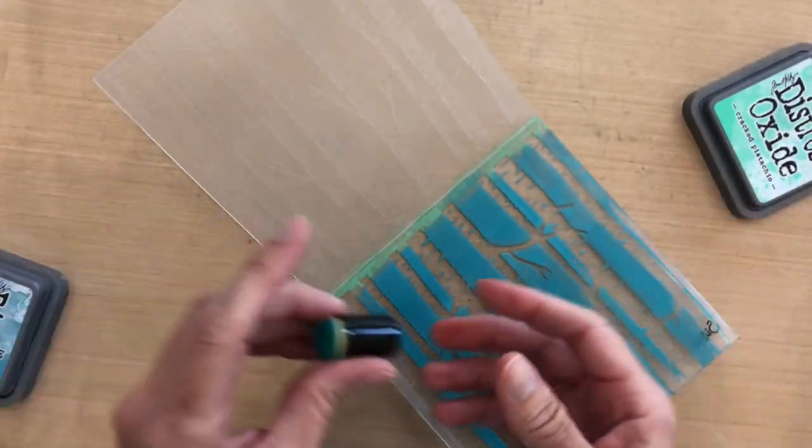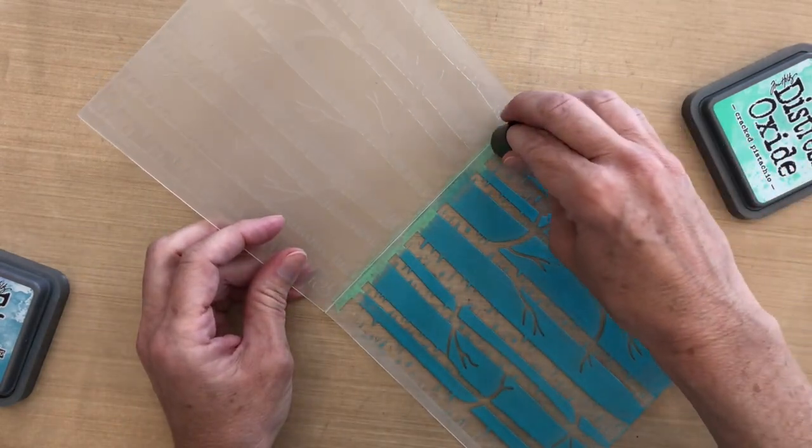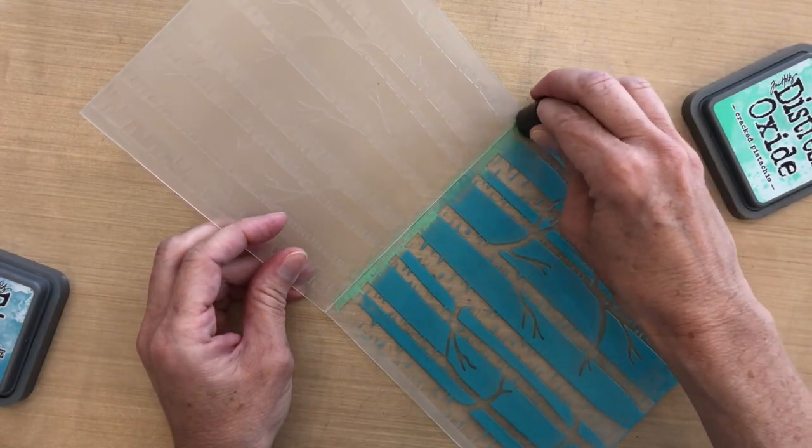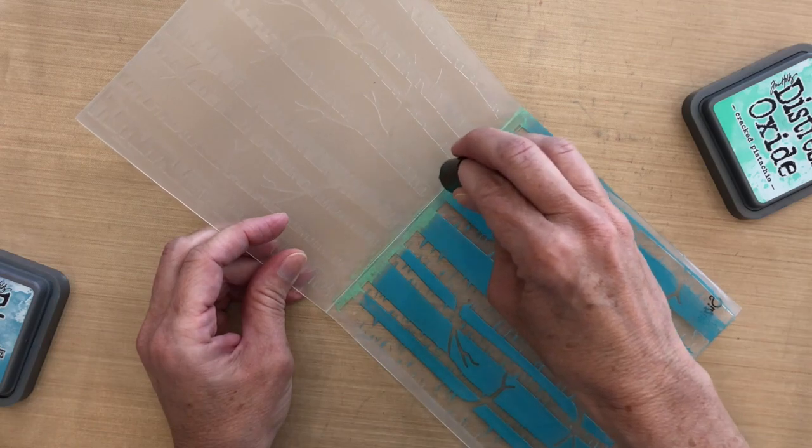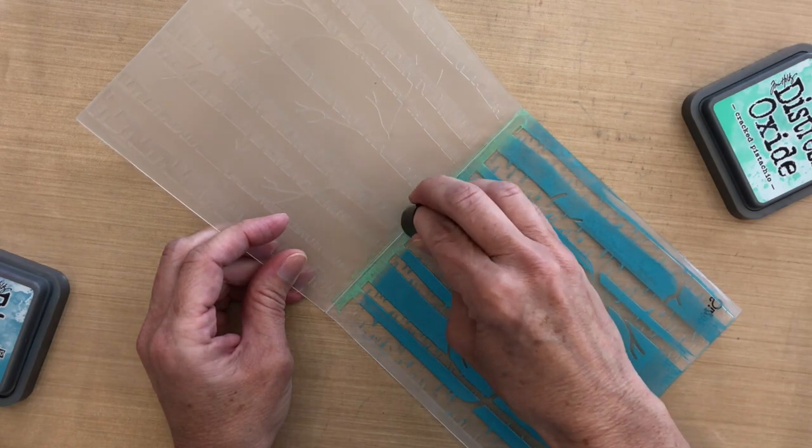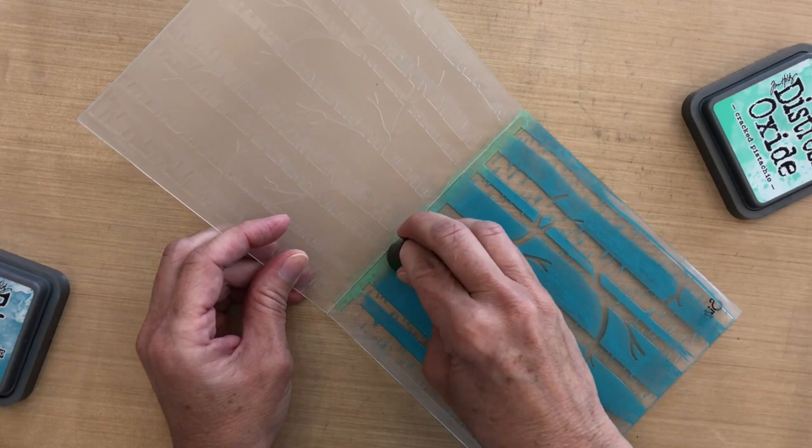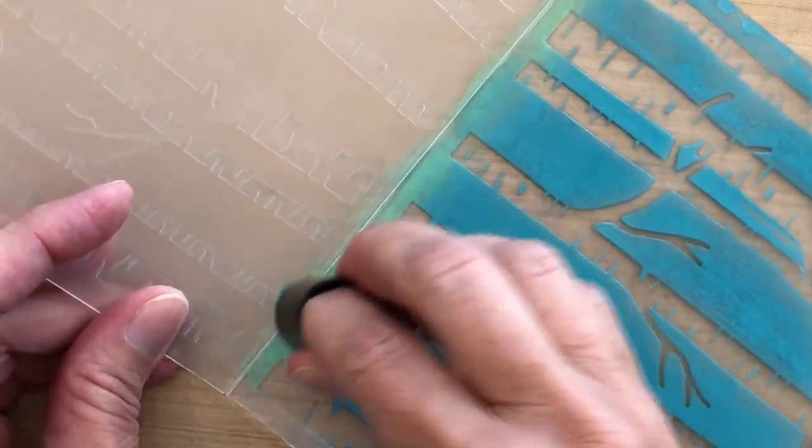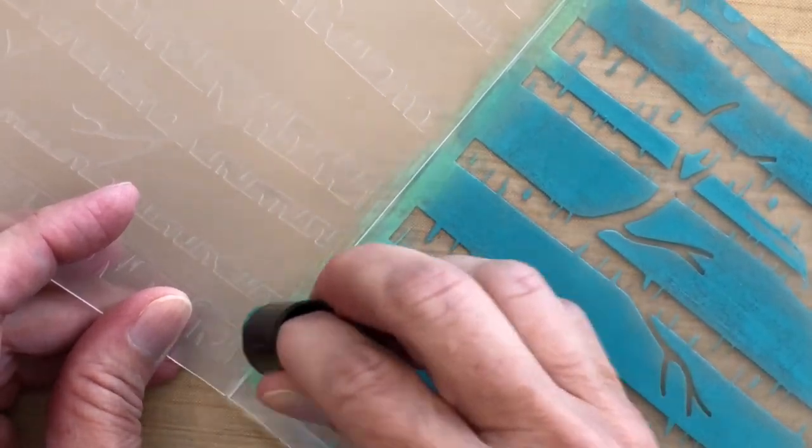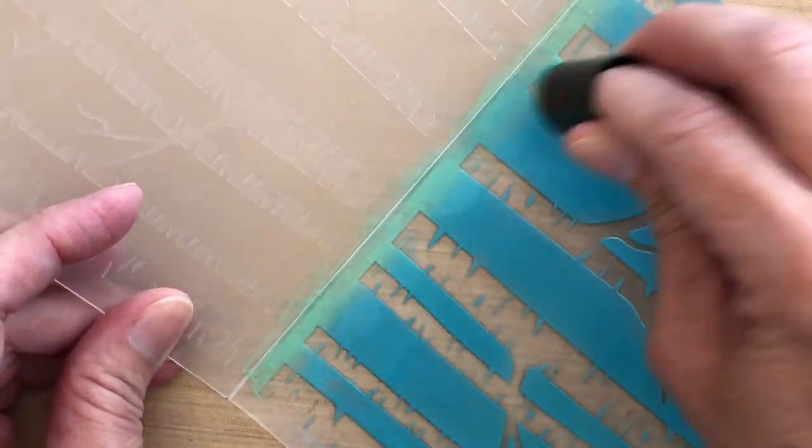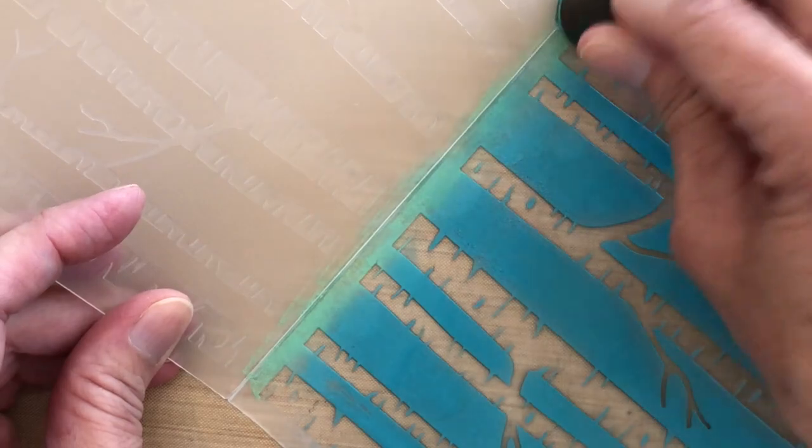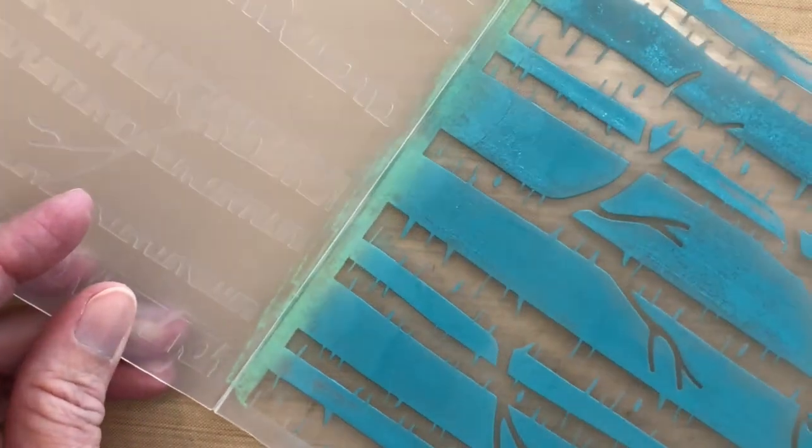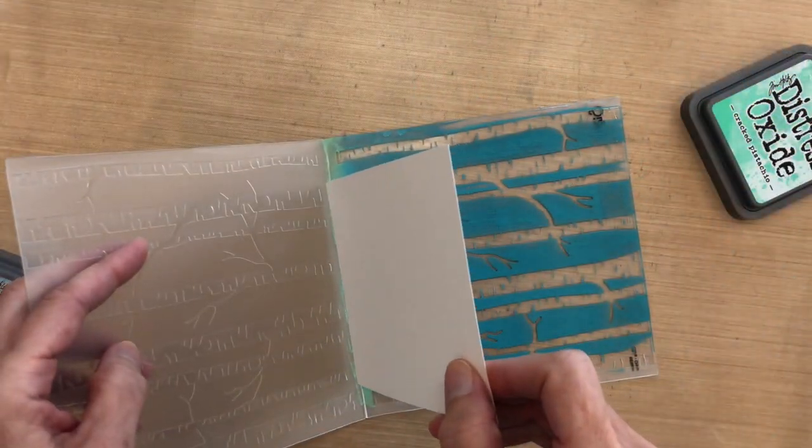To get these two colors to blend, I'm going to take a sponge dauber and just tap all the areas where the two colors meet. It's really amazing how well the ink blends by just doing this. I'm just barely tapping. You don't want to do too much because it'll remove some of the color and it won't come out very dark on your cardstock.